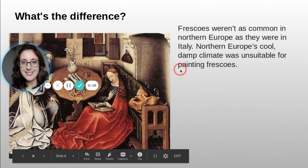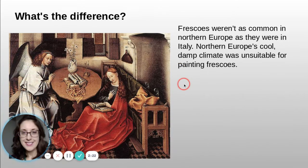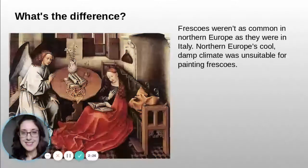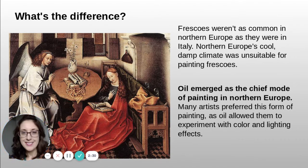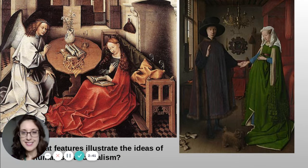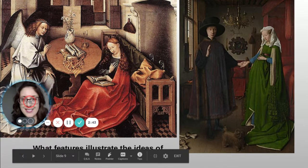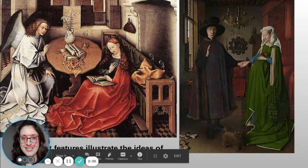What's the difference? Frescoes weren't as common in Northern Europe as they were in Italy. Northern Europe's cool, damp climate was unsuitable for painting frescoes. Oil emerged as the chief mode of painting in Northern Europe. Many artists preferred this form because oil allowed them to experiment with color and lighting effects. Students were asked to look at two paintings and identify features illustrating humanism and realism.